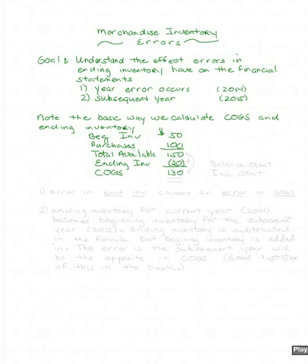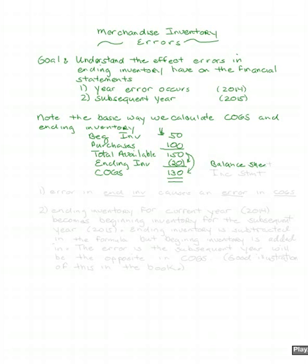You can split it using periodic or perpetual — FIFO, LIFO, or weighted average — but in some way you must split the total available between what's left and what's gone. What's left goes to the balance sheet as inventory, a current asset, and what's gone goes to the income statement as part of cost of goods sold.